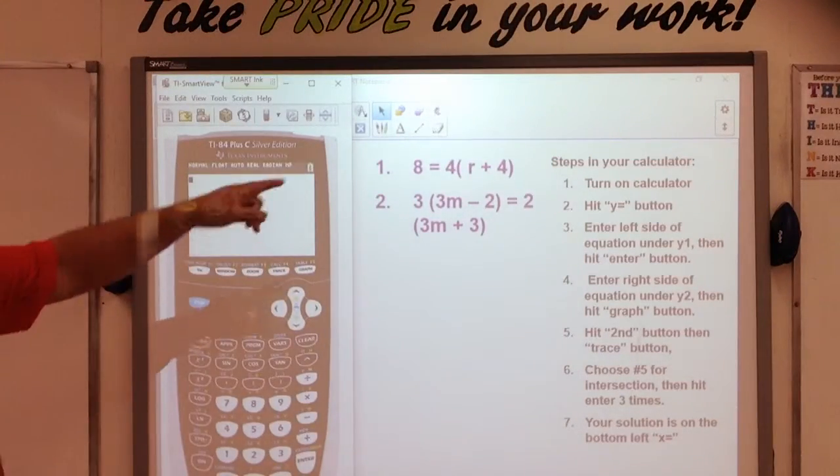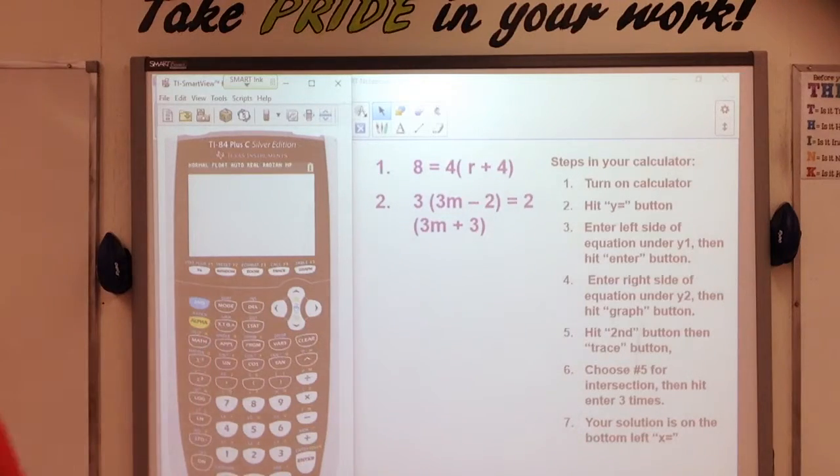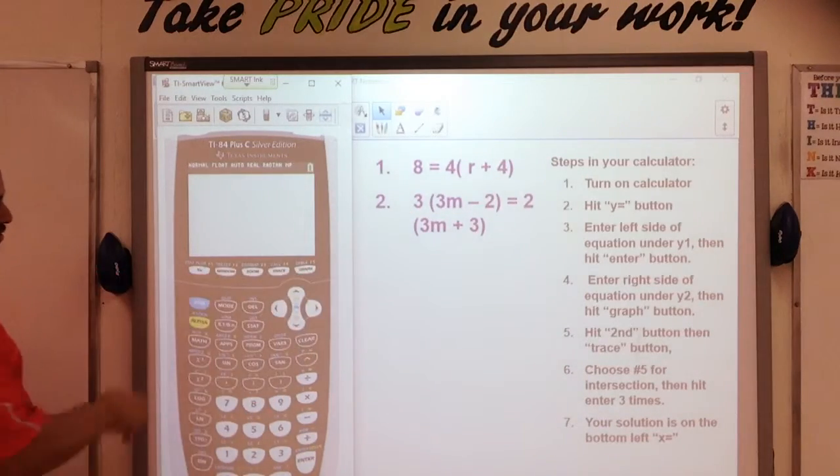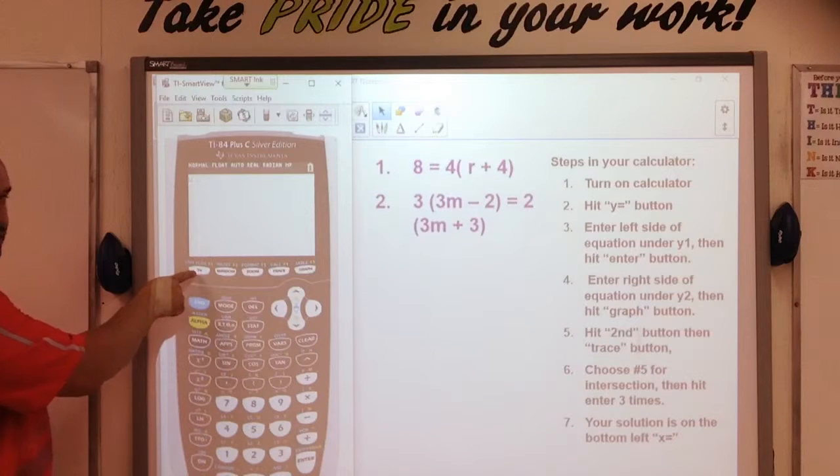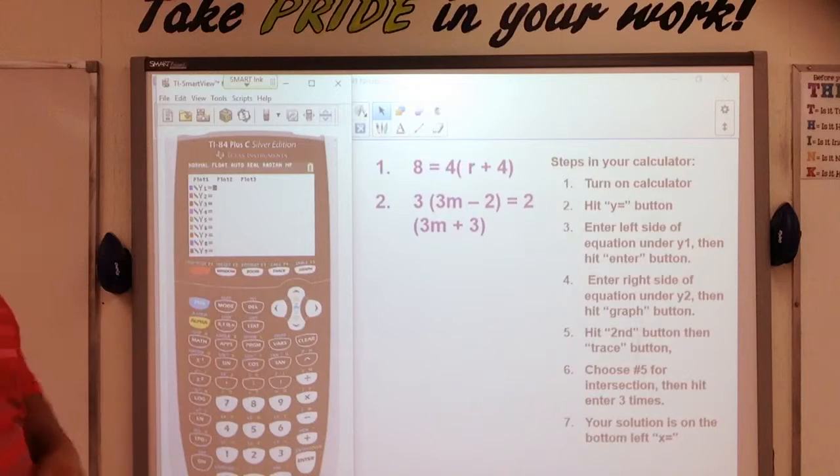So, my calculator is here. Step one is to turn on the calculator, which I've already done. Step number two, hit the y equals button. The y equals button is right here. Hopefully, you should be able to see it. Once you hit it, this is your screen that comes up.